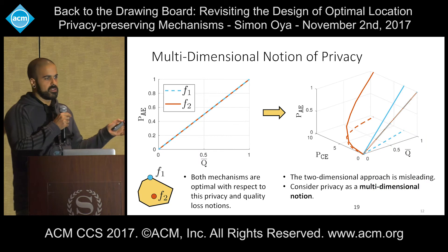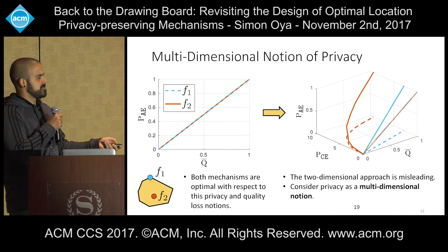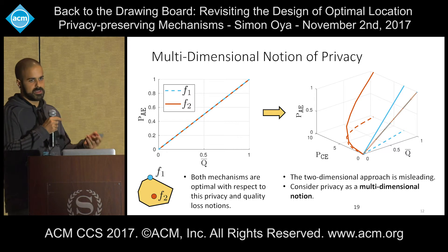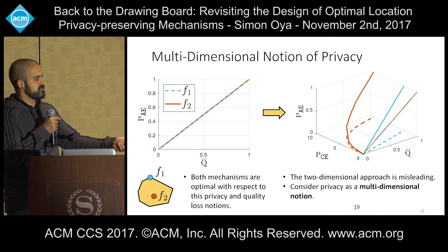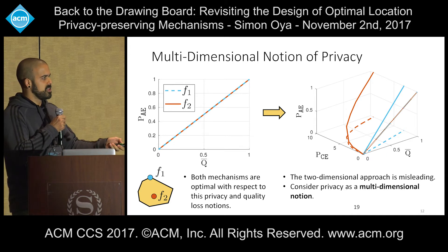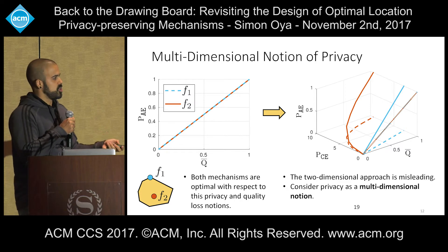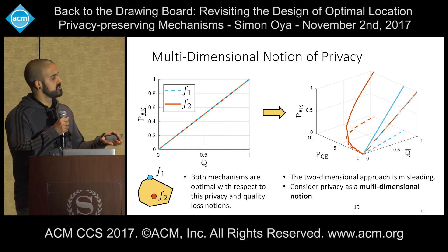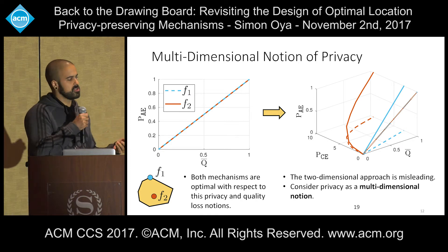As a summary, what we propose in this work is that evaluating mechanisms by looking only at average error versus average loss is misleading, because it gives many mechanisms as optimal, but when we look at them with another privacy metric like conditional entropy, the mechanisms can be really different. We argue that the two-dimensional approach that has been followed is misleading and that privacy should be considered as a multi-dimensional notion.